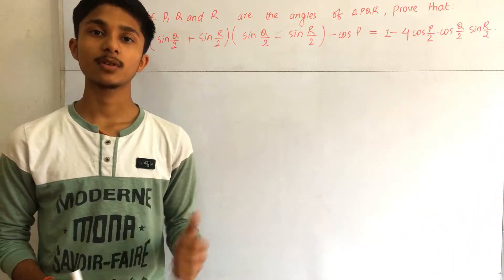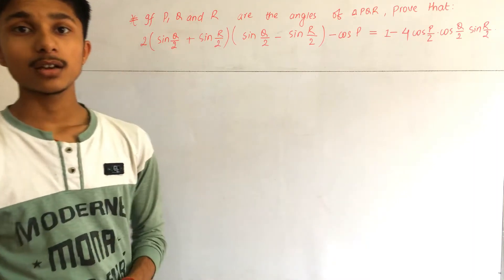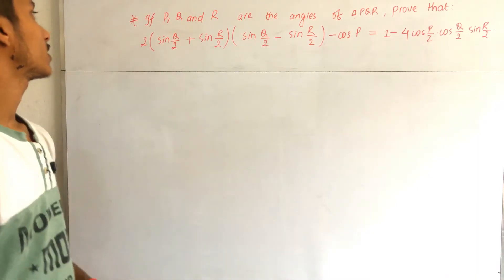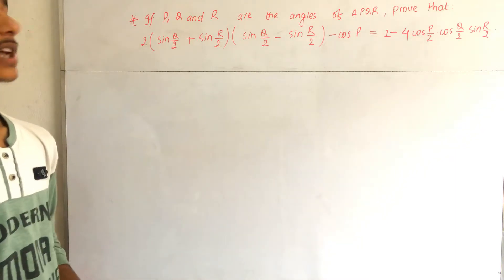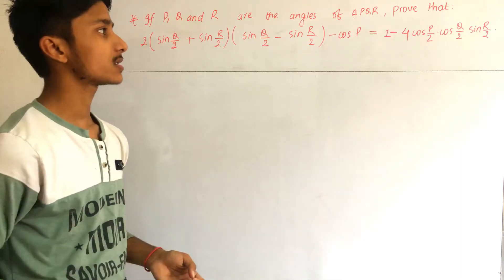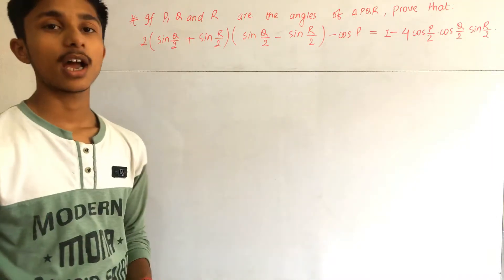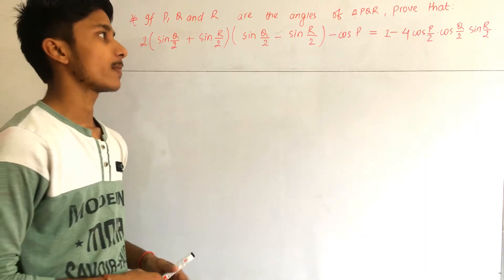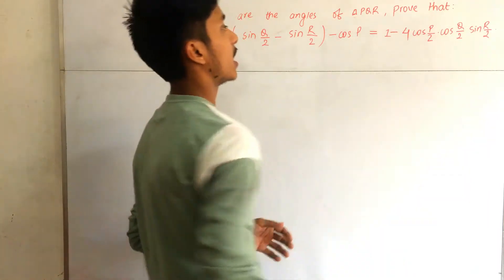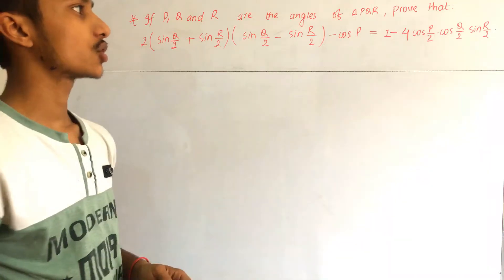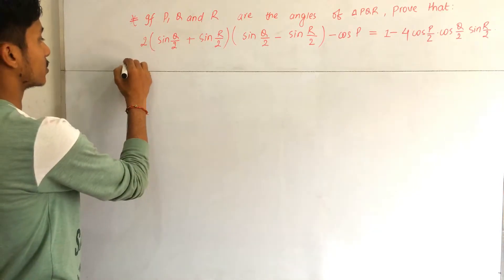Here you can see this is our question. We have: if P, Q, and R are the angles of a triangle PQR, prove that 2(sin(Q/2) + sin(R/2))(sin(Q/2) - sin(R/2)) - cos P is equal to 1 - 4cos(P/2)·cos(Q/2)·sin(R/2). This is our LHS and we have to prove the RHS.